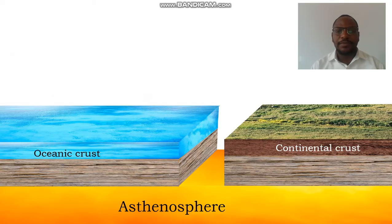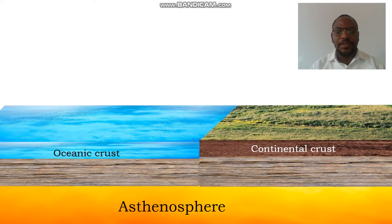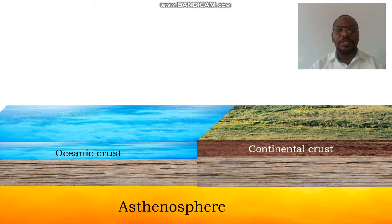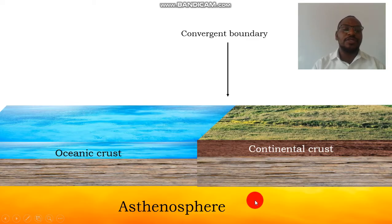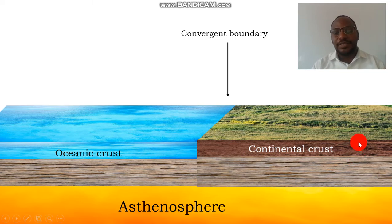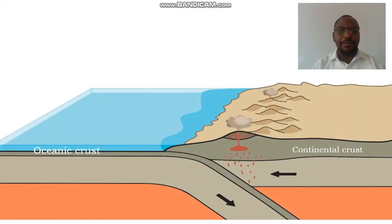Fold mountains are actually formed due to movement of tectonic plates towards each other. The first case is when we have an oceanic crust moving towards a continental crust. The point of collision forms a convergent boundary, and what happens here is that the oceanic crust will sink beneath the continental crust, simply because the oceanic crust is made up of denser rocks.